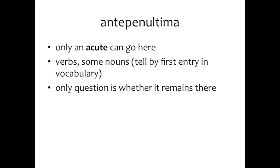The first thing you have to do is ask yourself: where does the word want to be accented? Let's assume we know that a Greek word wants to be accented on the antepenultima — that is, the third from the end. All verbs are like this, and some nouns are like this. If you know that the word wants to be accented on the antepenultima, the only accent that can be used is the acute. You can't put a circumflex or a grave here — it has to be an acute. The only question is whether it wants to stay there or move one forward.